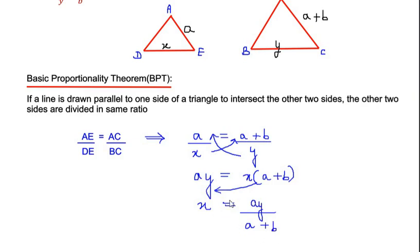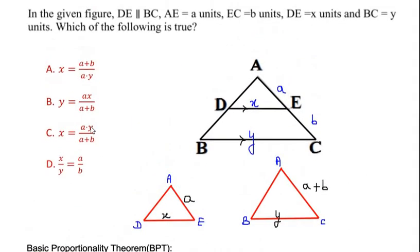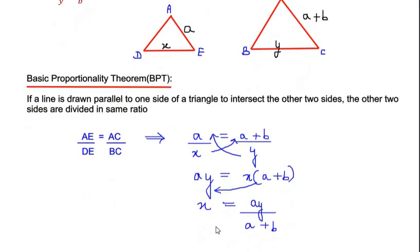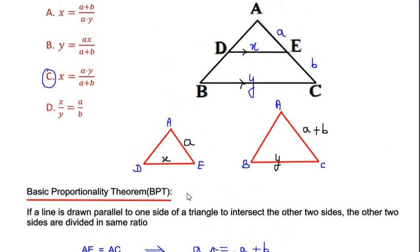Now, let us check if we have this as the option, x equals a y over a plus b. We have option C: x equals a y over a plus b. This is the answer we were looking for by using the basic proportionality theorem of the triangle.